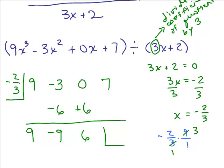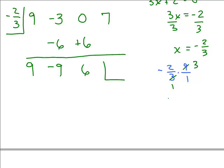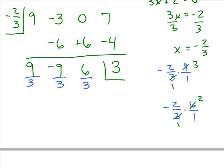Now multiply 6 by negative 2/3. The answer is negative — 3 goes into 6 twice — so that's negative 4. Add to get 3, and that is the remainder. We have to remember that because the coefficient in the divisor was 3, we must divide all the quotient coefficients by 3, not the remainder, just the coefficients of the quotient.